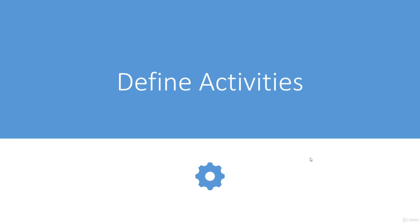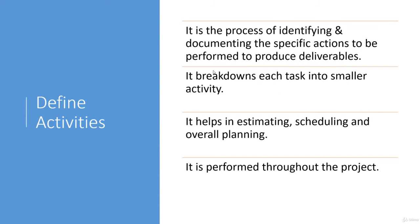Next we have Define Activities. We cannot plan our schedule if we don't know the activities, so we need to identify the activities we are going to perform in a project and the effort they need. In this process, we identify those activities which are going to produce our deliverables. It is the process of identifying and documenting the specific actions that need to be performed to produce deliverables. It breaks down each task into smaller activities — for example, coding can be divided into smaller groups so we can estimate them correctly.